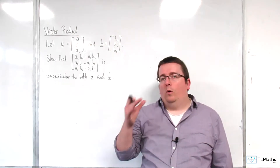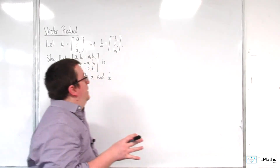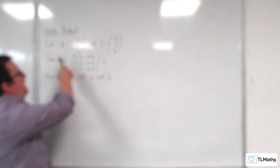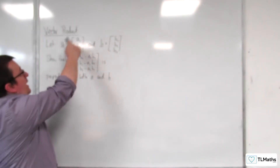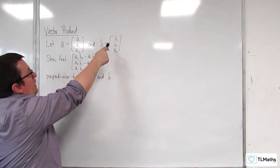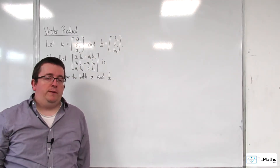In this video, what we're going to do is define the two vectors a and b. a is (a1, a2, a3) and b is (b1, b2, b3).